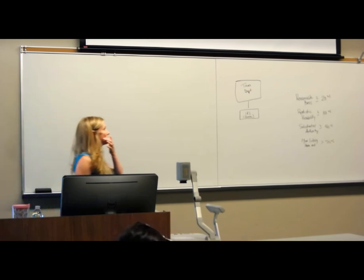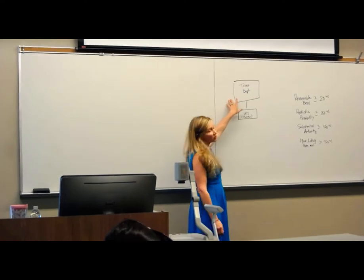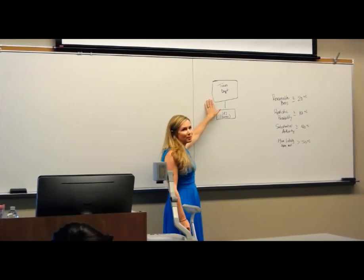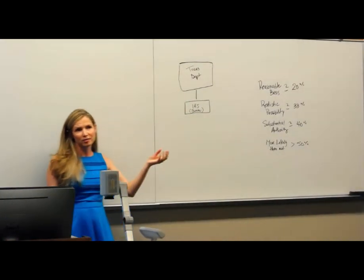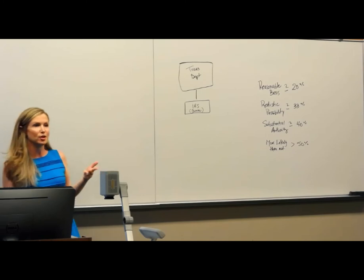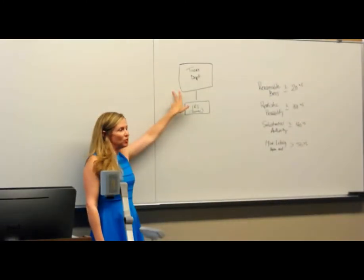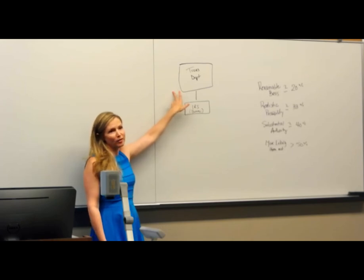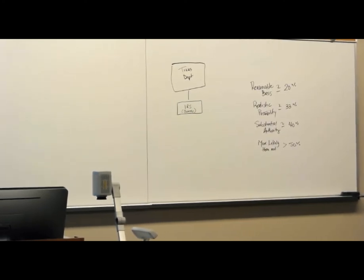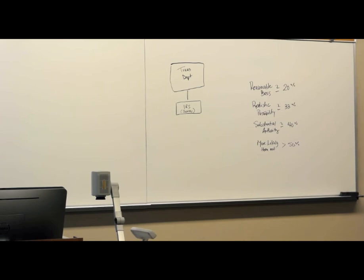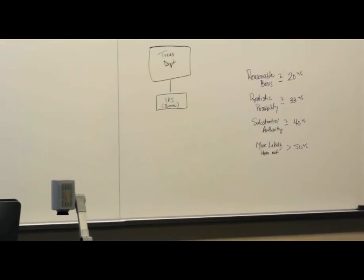The Treasury Department is an administrative branch. Administrative departments are part of the government, and over time these administrative departments have become very large and very powerful. We used to refer to the three branches of government — executive, legislative, and judicial — but nowadays a lot of people call this almost a fourth branch of government, or they throw it into the executive branch. The IRS is a bureau within the Treasury Department — it's not technically the Treasury Department, but the IRS falls underneath it. The Treasury Department issues several different types of authority.